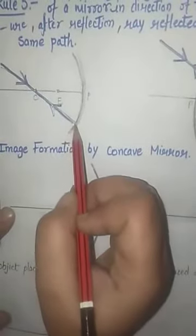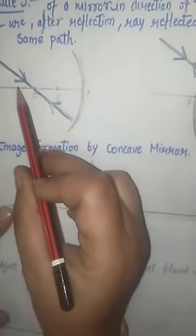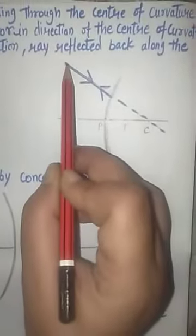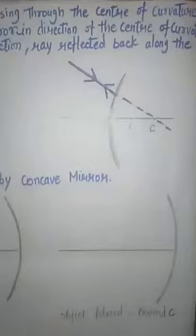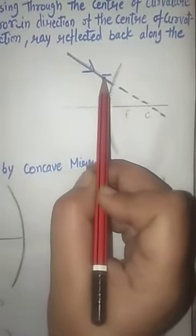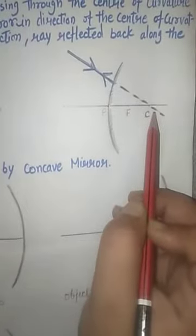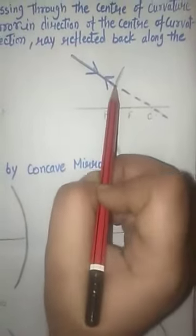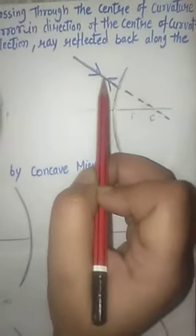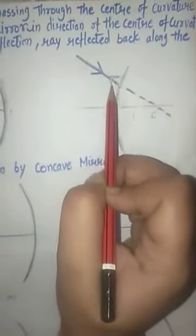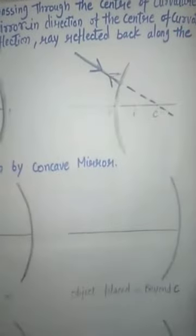The same applies in the convex mirror — when a ray coming directed towards the center of curvature strikes the mirror, it gets reflected back along the same path.